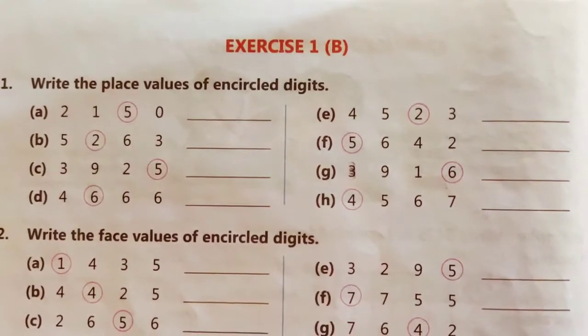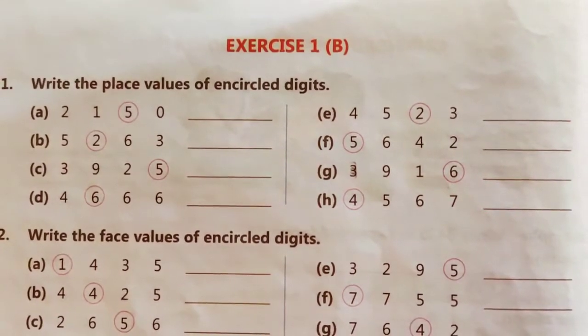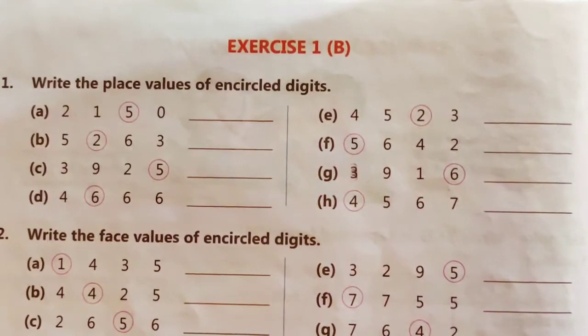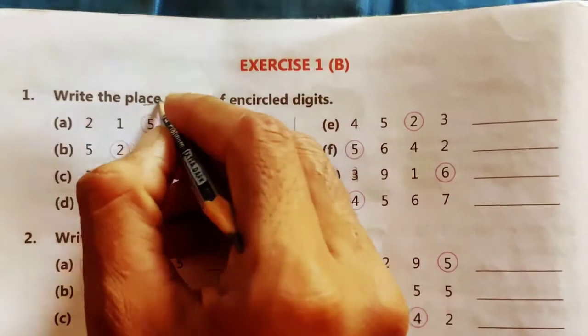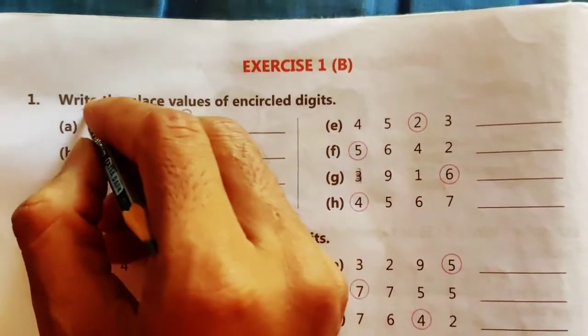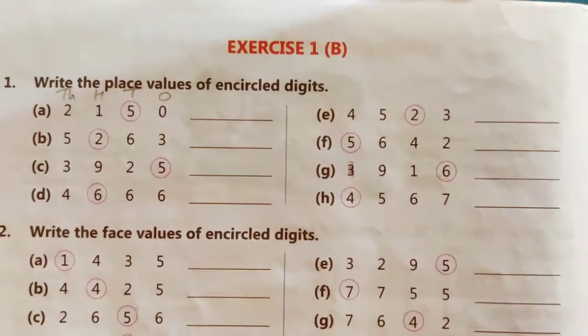Exercise 1b, question number 1. Write the place value of encircled digits. Now what is place value? So for place value first of all we have to write ones, tens, hundreds and thousands on the top of the numbers.